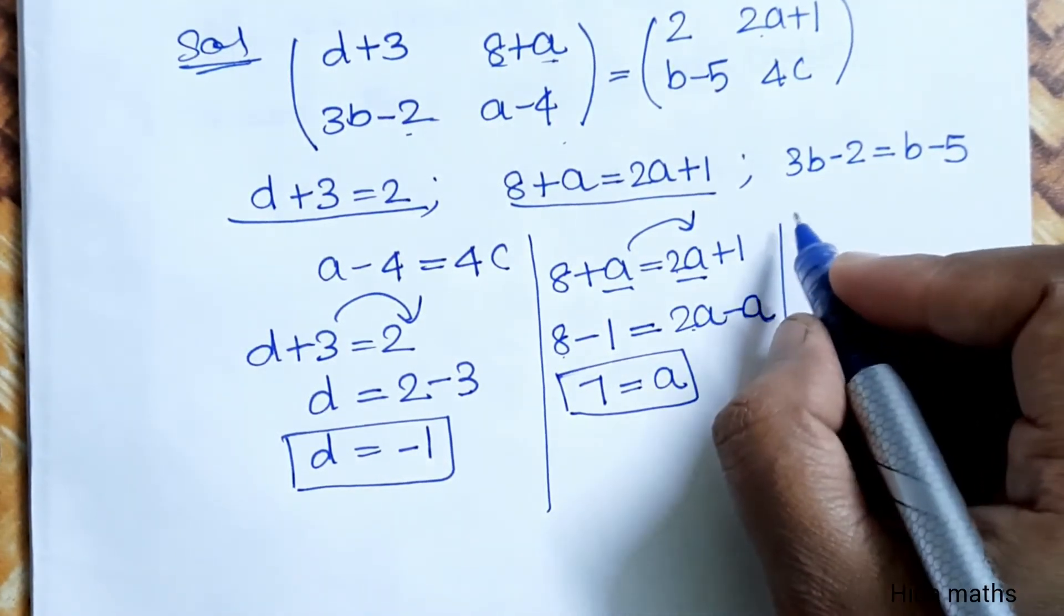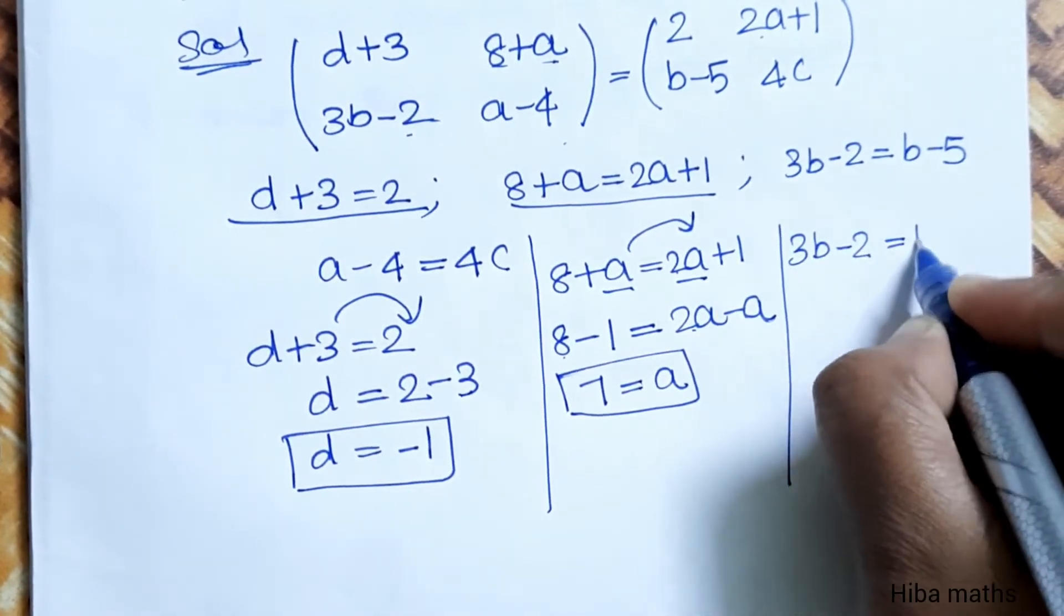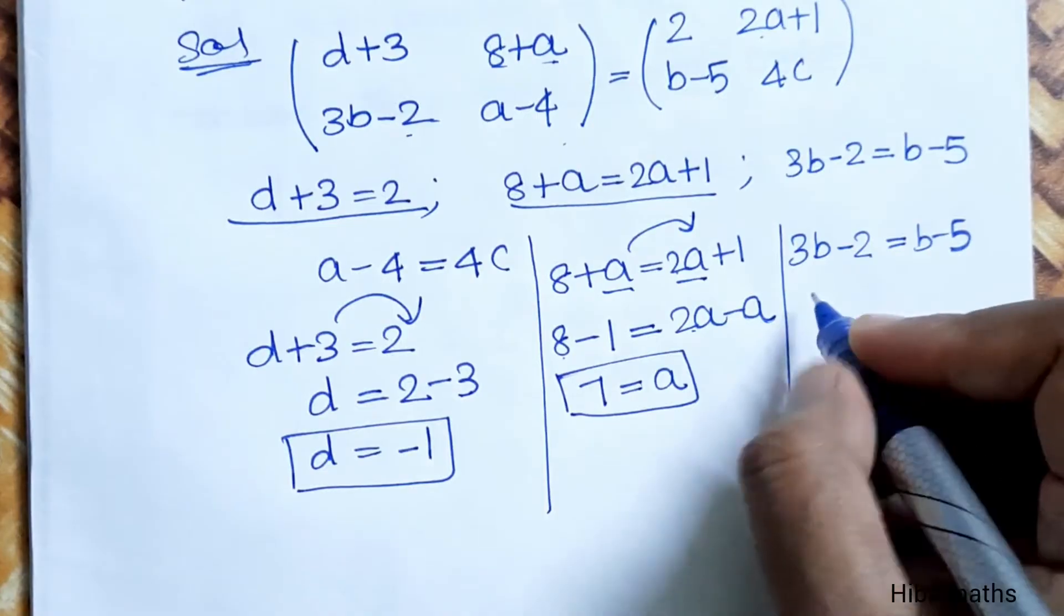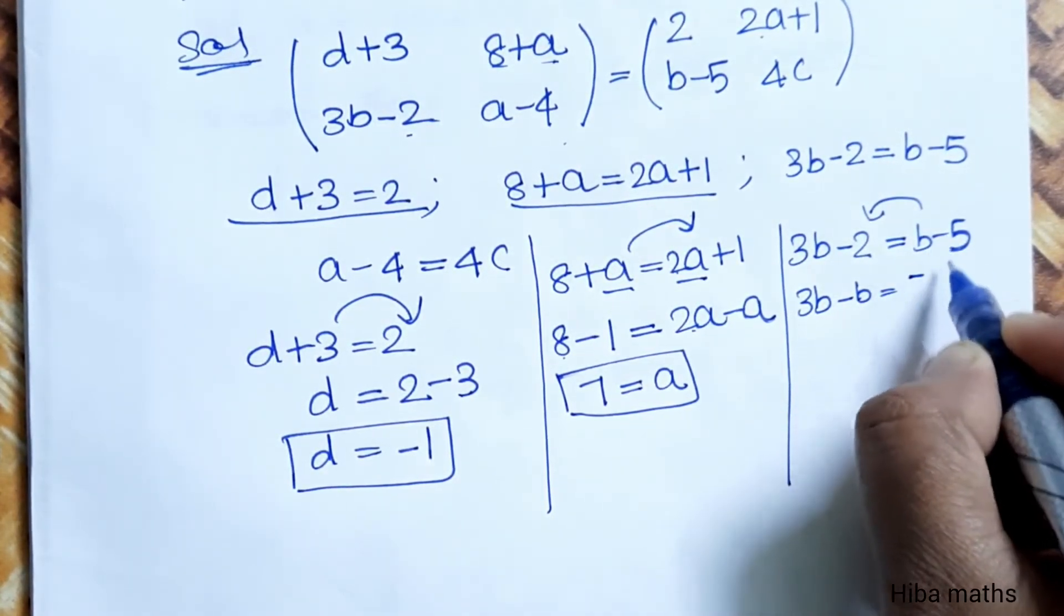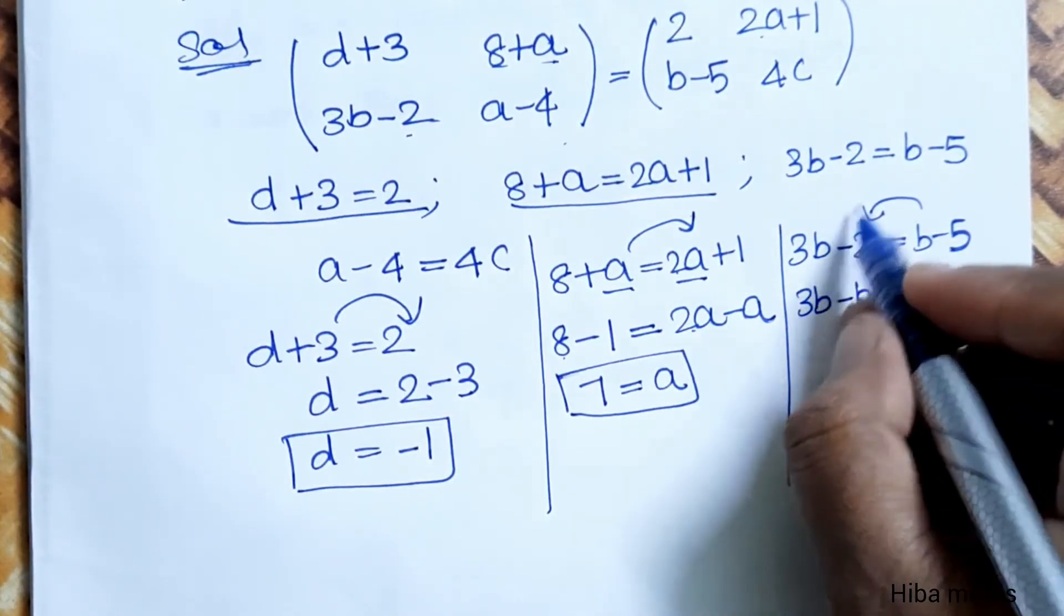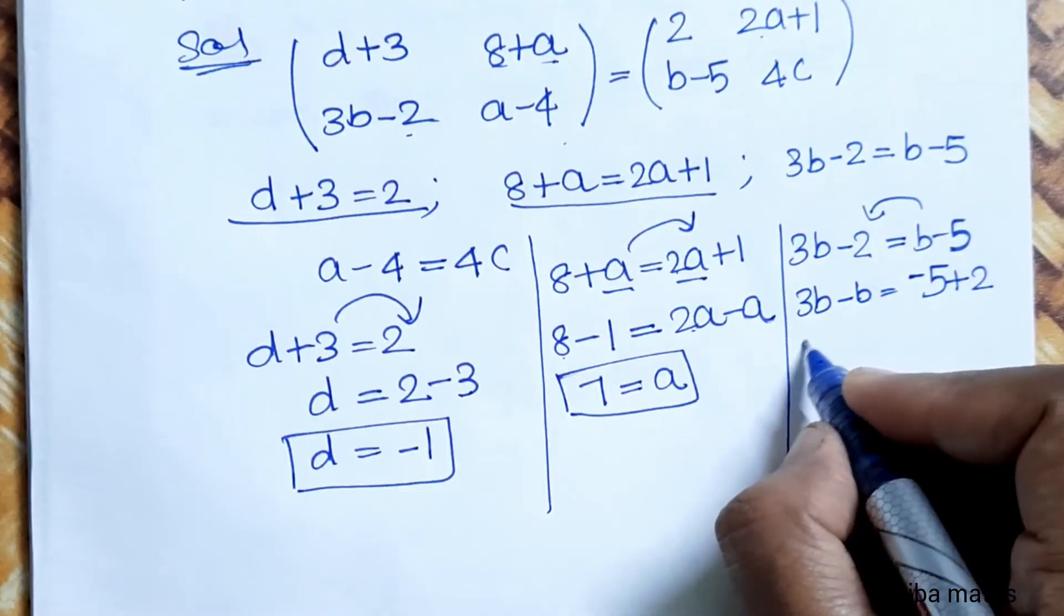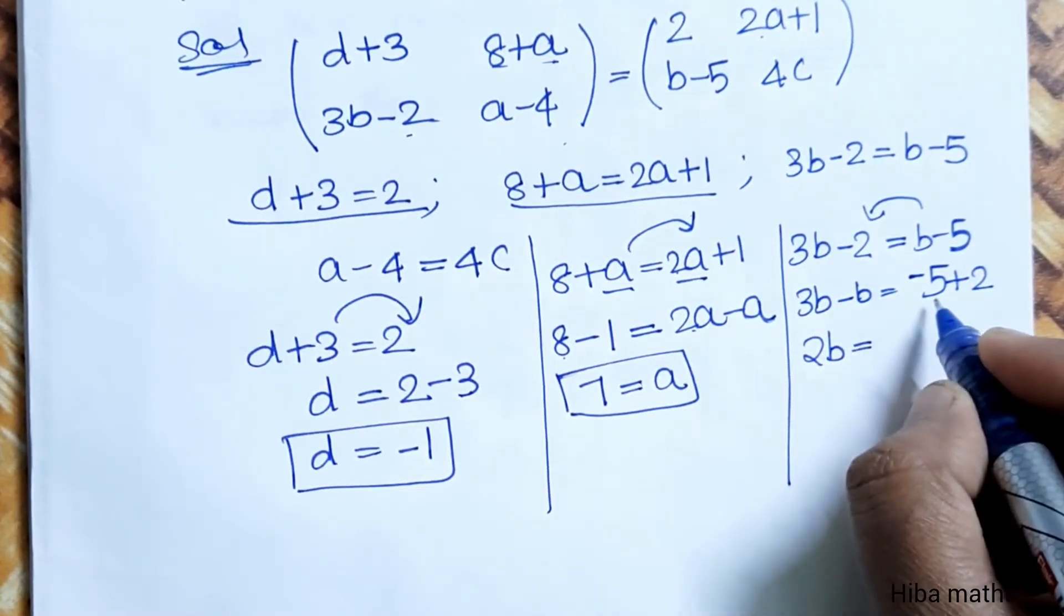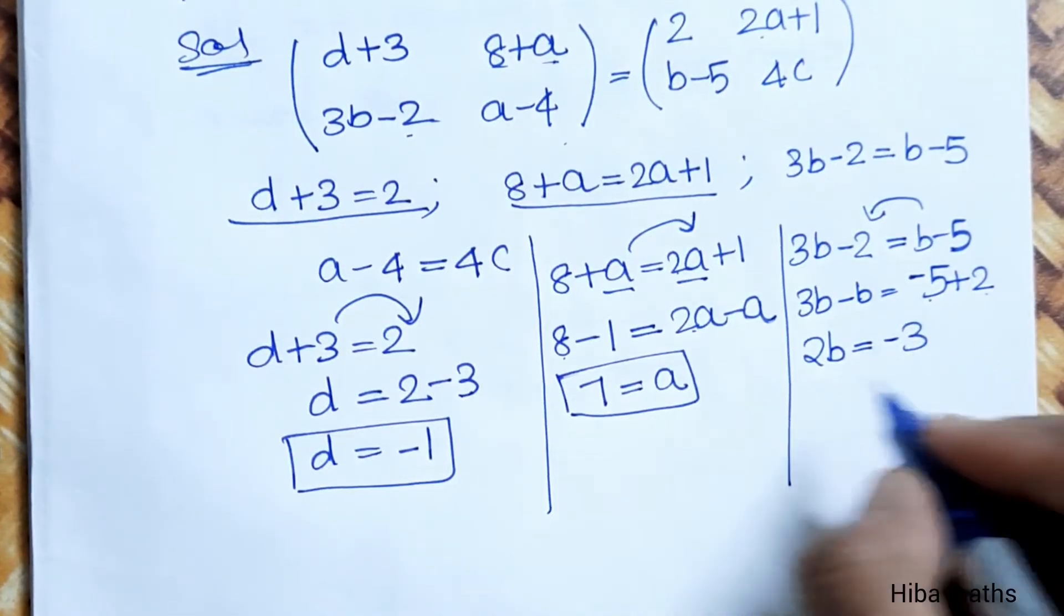Third equation is 3B minus 2 is equal to B minus 5. So B is equal to minus 3.